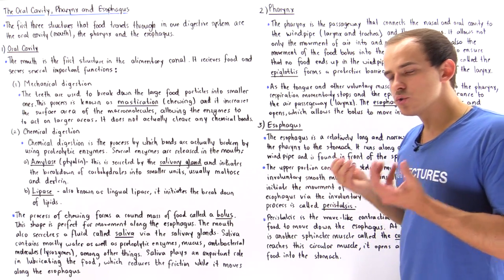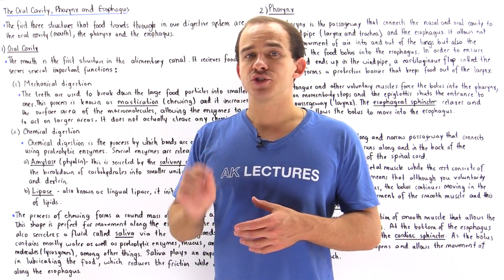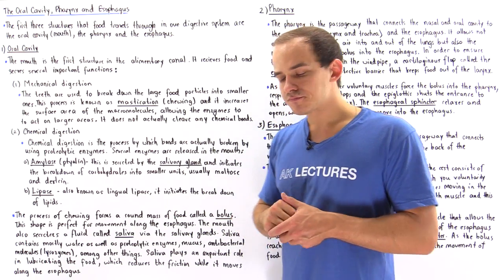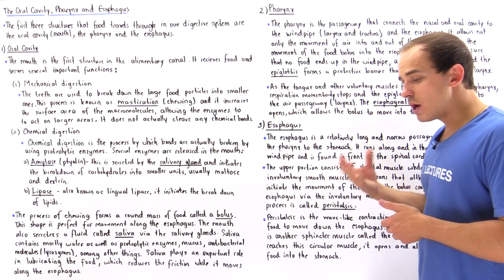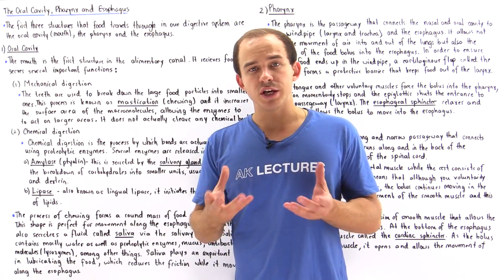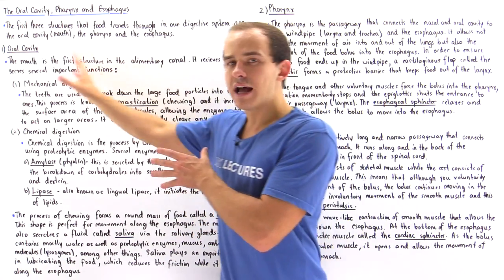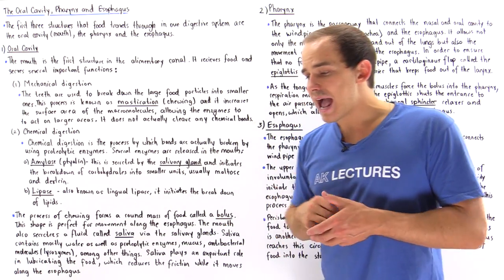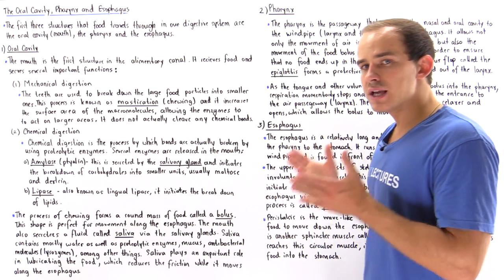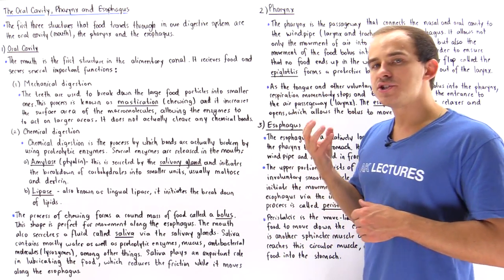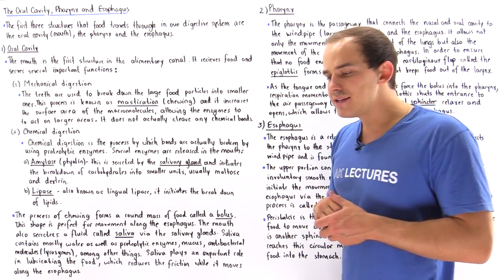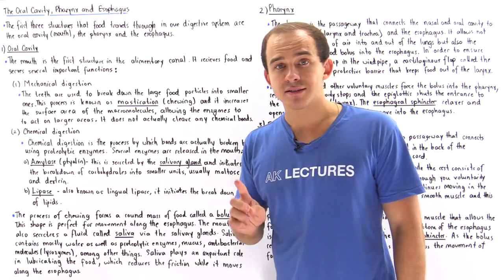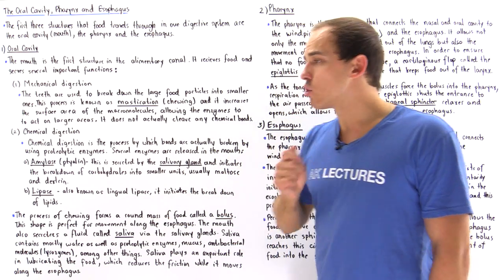The oral cavity, also known as the mouth, initiates two important processes: one called mechanical digestion and the other called chemical digestion. Mechanical digestion is the process by which we break down large food particles into much smaller food particles. It does not break any covalent bonds that hold those macromolecules together. Instead, it increases the surface area of the food on which the proteolytic enzymes found in the mouth, stomach, and small intestine can act, making digestion more efficient and effective.